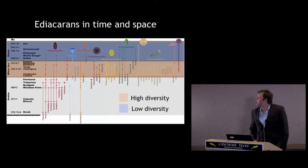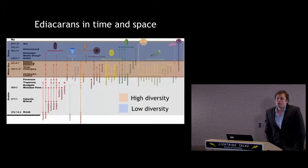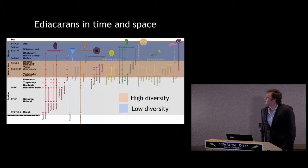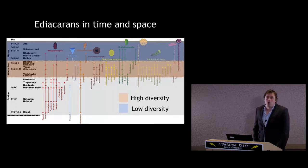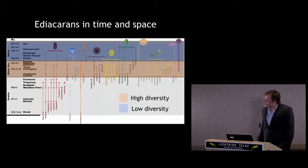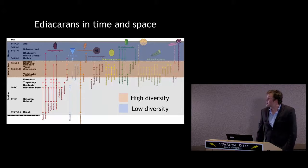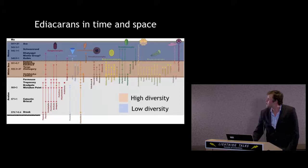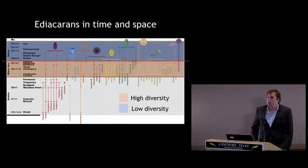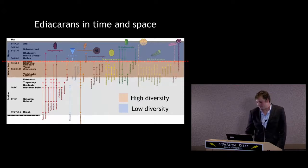In the latest Ediacaran, we lose a lot of these groups. So the disappearance of the Ediacaran biota would seem to be quite gradual. If you were to place the beginning of this supposed extinction horizon, you'd probably put it somewhere between these two assemblages.